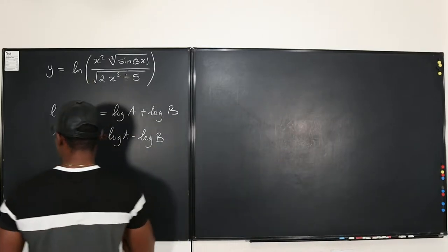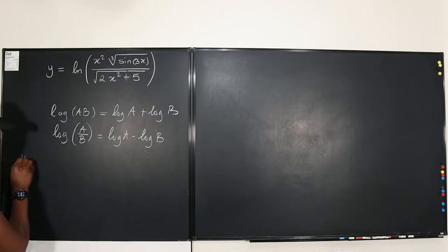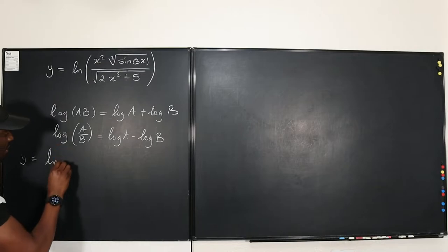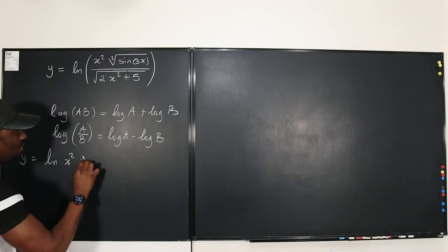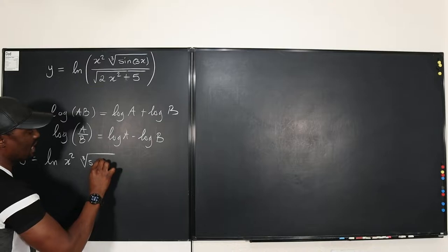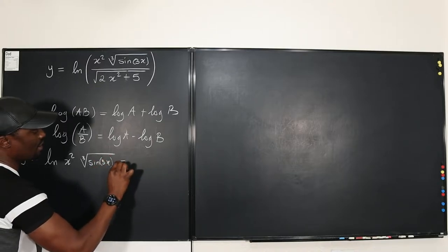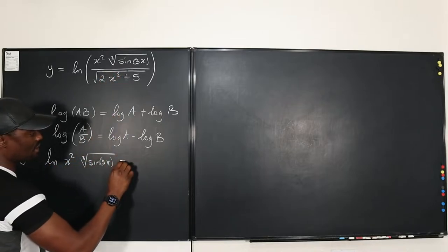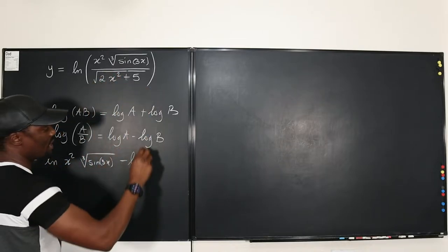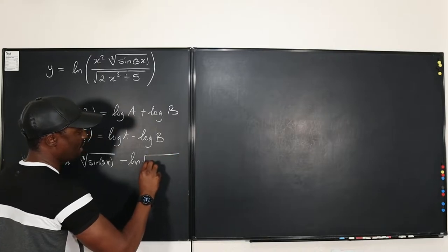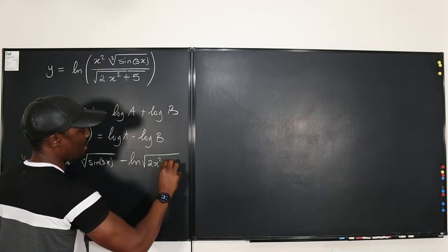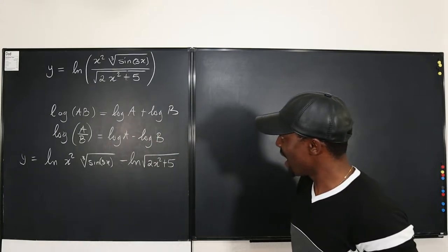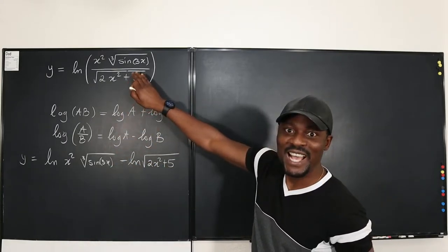So let's take the first step. We're going to say y equals the natural log of the top, which is x squared multiplied by the cube root of sine 3x, minus the natural log of what is underneath, which is the square root of 2x squared plus 5. It looks so easy — it is no longer as crazy as what we had before.